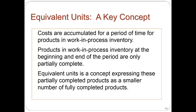What we're doing is trying to track the cost from raw materials through work in process, through the various departments, to finished goods. Costs are accumulated for a period of time in work in process. Products in work in process inventory at the beginning and end of the period are only partially complete. For example, with petroleum or any product going from one department to another still in process at the end of the period, it's partially complete — and the equivalent unit calculation addresses how we account for that.